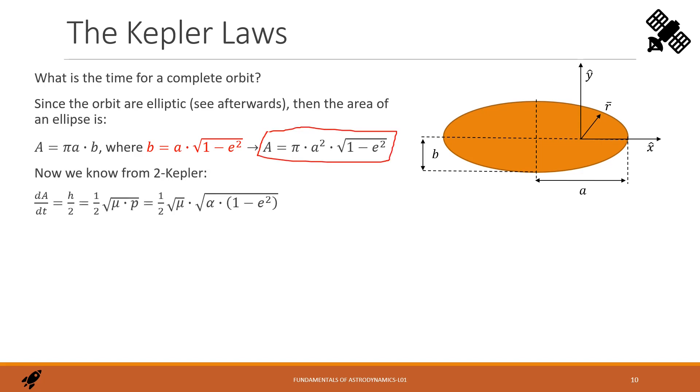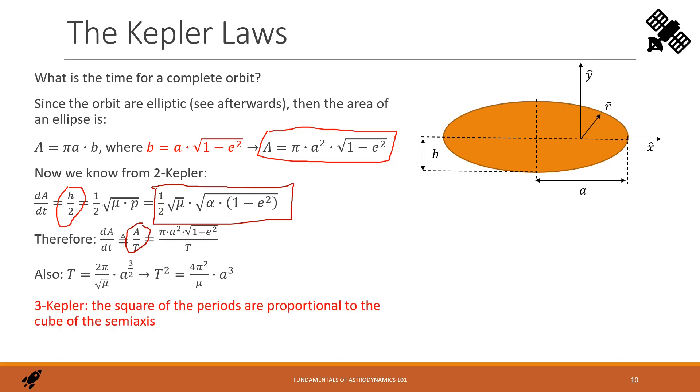Moreover, from the second Kepler law, we know that the areal speed is constant and equals h half. Let's plug now the expression of h we found in the previous slide. We get an expression for the areal speed depending upon a and e only, apart from mu, which is a constant for the planet. The areal speed is also the total area divided by the total time. That is the period that we are looking for. That means that the period is given by this expression. If we make the square, we get the third Kepler law. The square of the period is proportional to the cube of the semi-axis of the orbit.